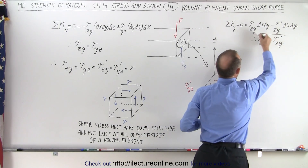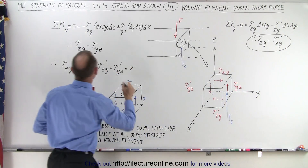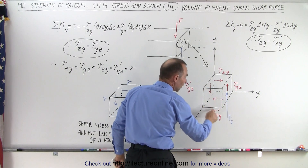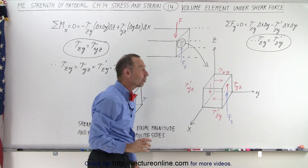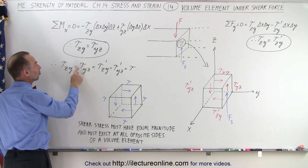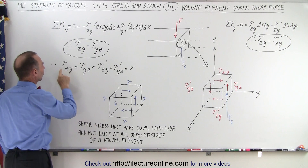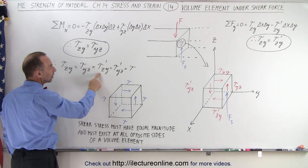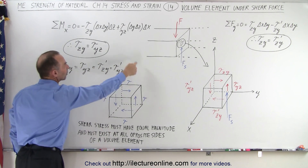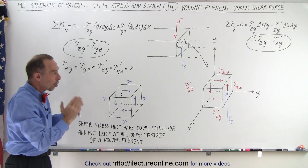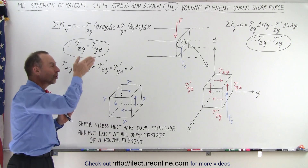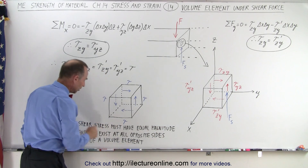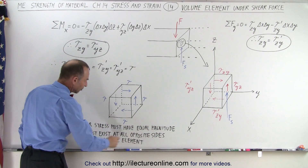Taking this equality and adding it to the previous one, we realize that all the shear stresses on the volume element all the way around must have equal magnitude. Therefore, tau_zy equals tau_yz, and tau_zy must equal tau_zy on the opposite side of the volume element — they're all equal. On a very small volume element, all the shear stresses must be the same all the way around all the sides, and must exist at all opposite sides of the volume element.